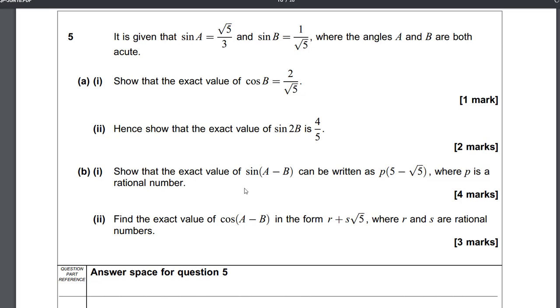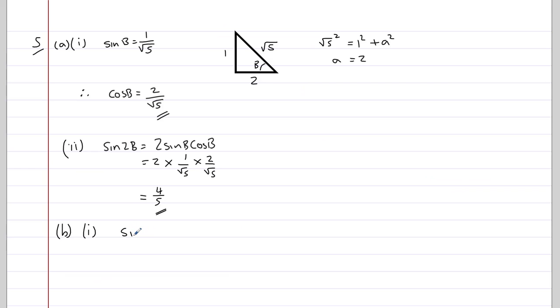In part B1, it says show that the exact value of sine A minus B can be written as P bracket 5 minus root 5, where P is a rational number. So we can get the formula of sine A minus B from the formula book. And we find we get sine A cos B minus cos A sine B.